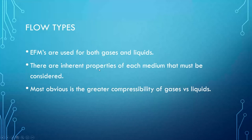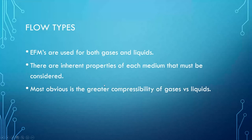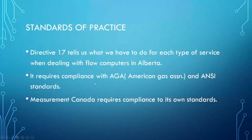When dealing with gas and liquid applications, we have to be aware of the properties of each medium to know what needs to be configured into a flow computer. The most obvious variable that differentiates gas and liquid flow is the compressibility of gases versus liquids. Compressibility comes into play when doing conversions between flowing conditions and standard conditions, and it's probably the biggest differentiator between the two fluid mediums.